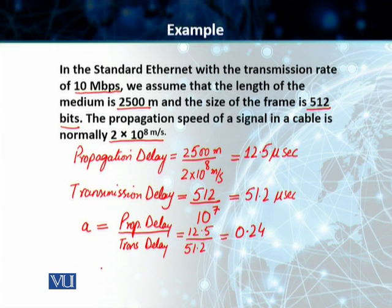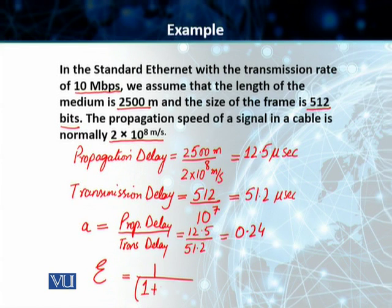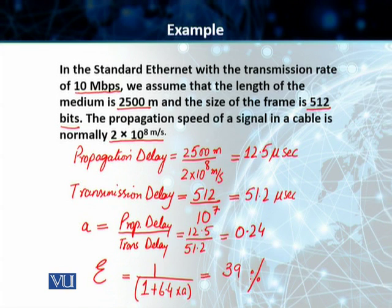Once we have 'a', we insert the value into the efficiency formula: 1 divided by (1 plus 6.4 multiplied by a). Inserting a = 0.24 and calculating, we get an efficiency of 39%.